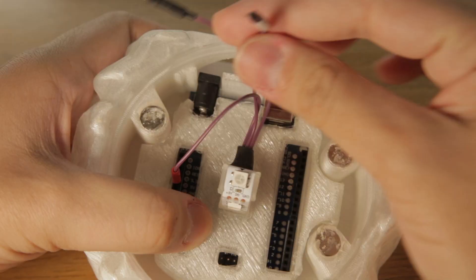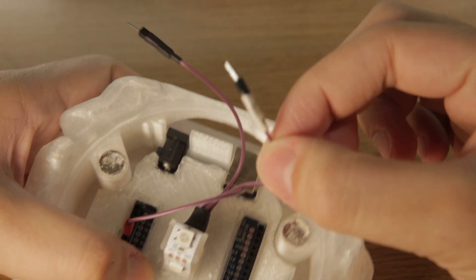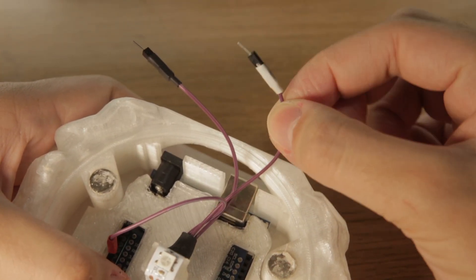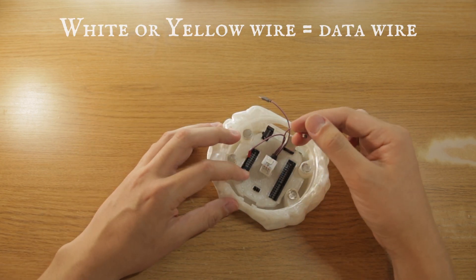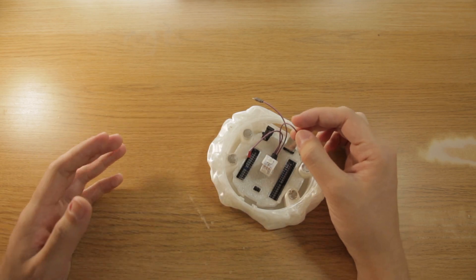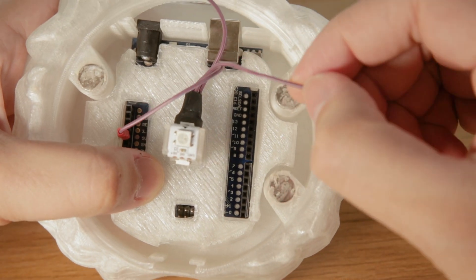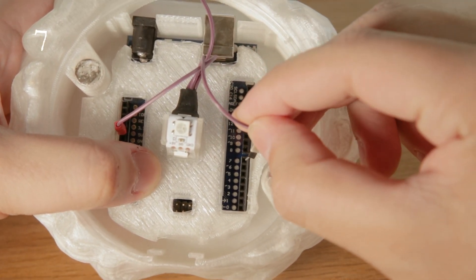The next is the white tag. This is going to be sending information from the controller to the lights to tell it what to do, for example, light up or do an animation. We're going to be plugging this into pin number seven on the controller.